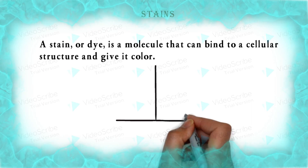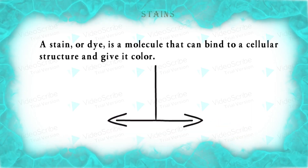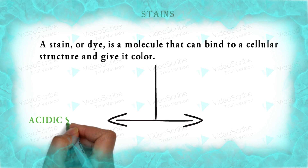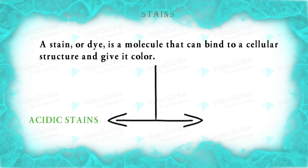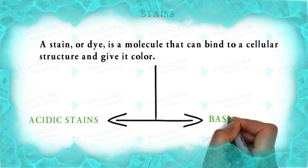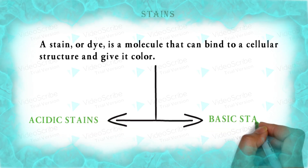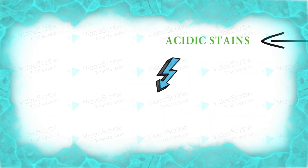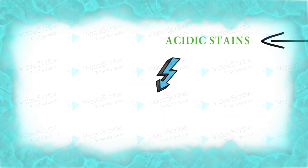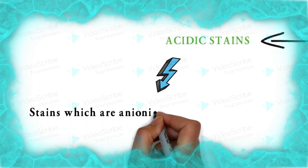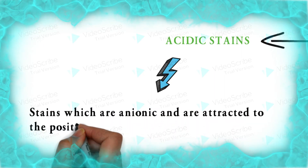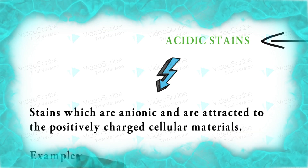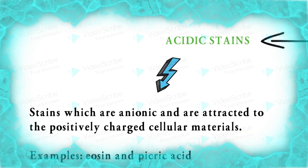Stains, on the basis of their pH, can be divided into two types: acidic stains and basic stains. Acidic stains are anionic in nature and bind with positively charged cellular materials. Examples are eosin and picric acid.